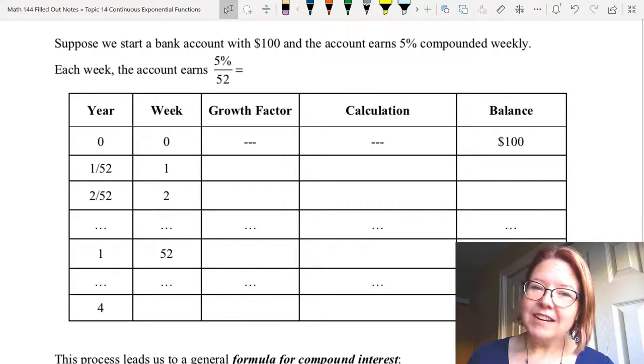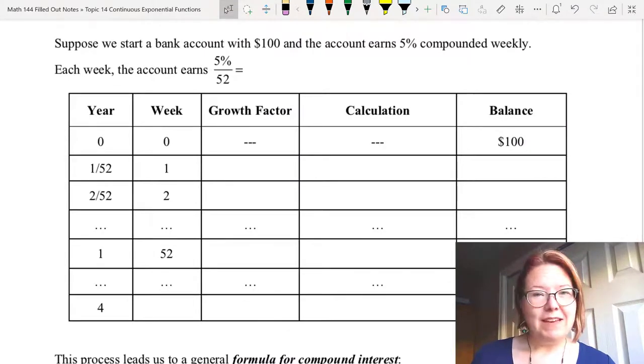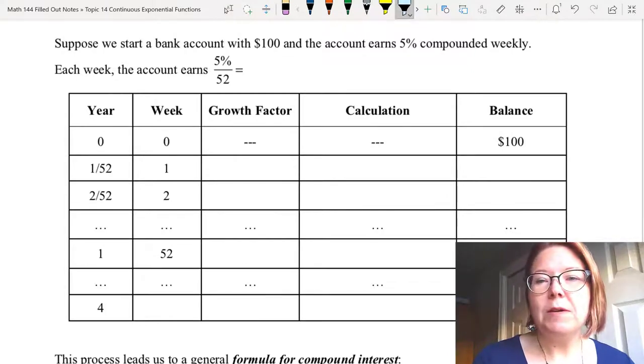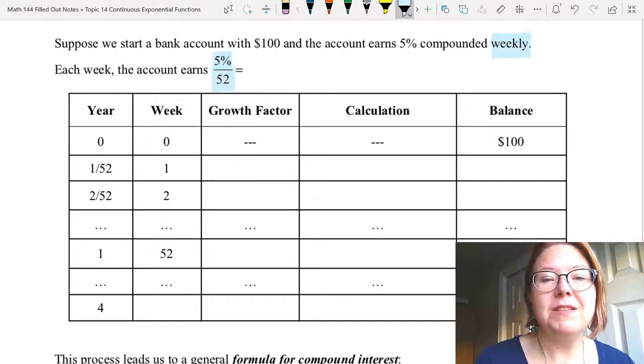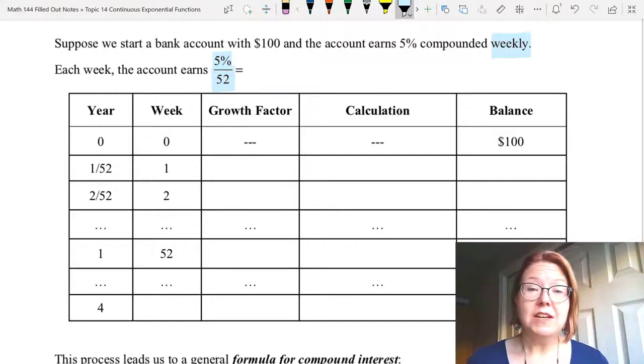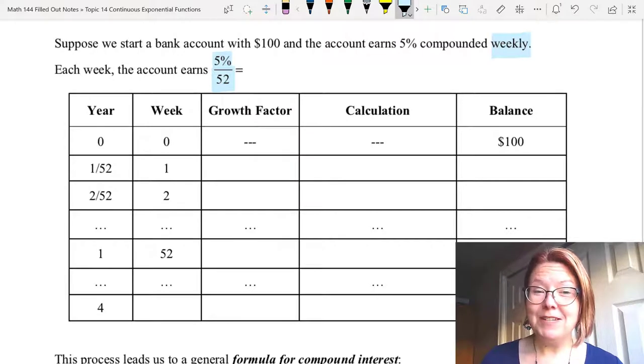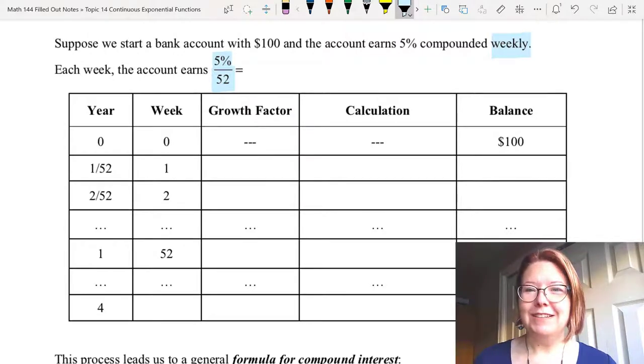All right, I have one more scenario, and I would like you to try this one. Again, we have a bank account with $100. The account earns 5%, but now we're going to compound weekly, which means that we are going to have to take 5% divided by 52 to get the weekly interest rate and the growth factor that accompanies that. You're going to find the balance for week one, week two, week 52, and for year four. Pause the video. Come back when you're finished.